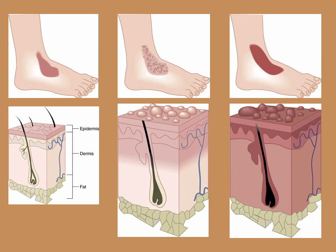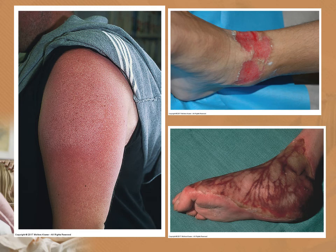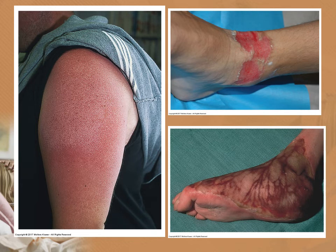Illustrations show the progression of burn depth: example one is superficial, example two is partial thickness, and example three is full thickness, demonstrating increasing tissue damage with depth. Photos show a superficial burn on the left, a partial thickness burn of the ankle on the upper right, and a full thickness burn on the lower right.